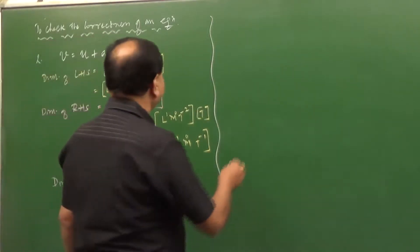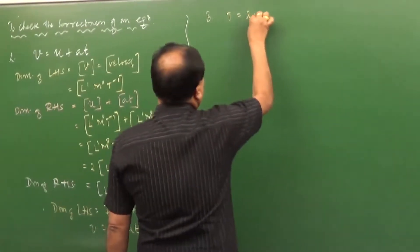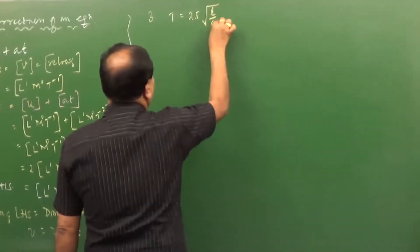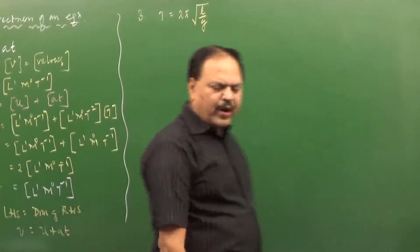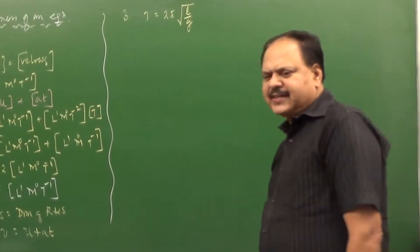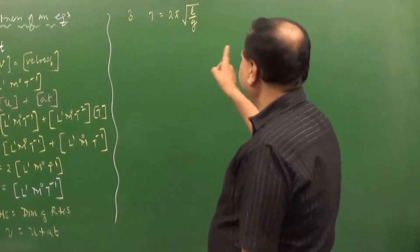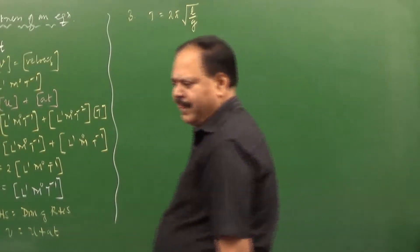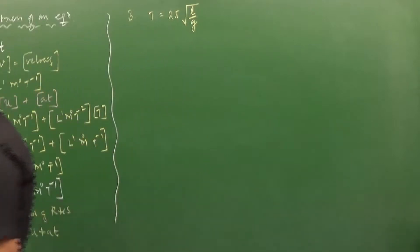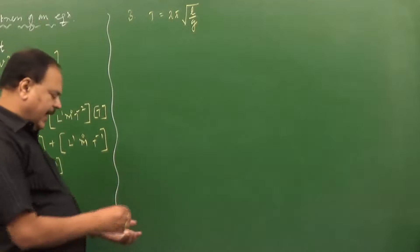Next question: Check the correctness of the equation T is equal to 2π into root of L by G. We have to check the correctness of this equation. Same approach — very easy. First, write the dimension of LHS, then the dimension of RHS.